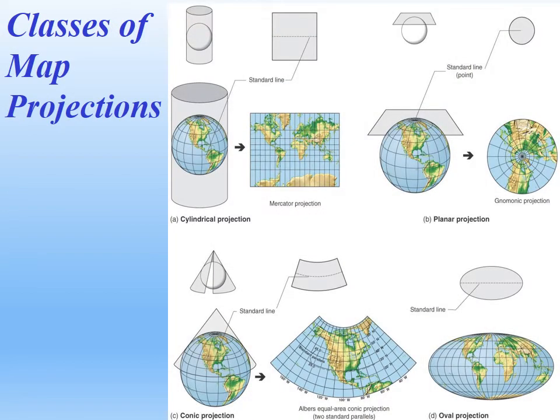There are three major map projection classes: cylindrical projection, planar projection, and conic projection. All of these greatly distort one part of the Earth, yet preserve a lot of the map properties of another part. We just talked about a type of cylindrical projection — the Mercator projection. The areas around the equator are relatively good, but near the poles they are greatly distorted.